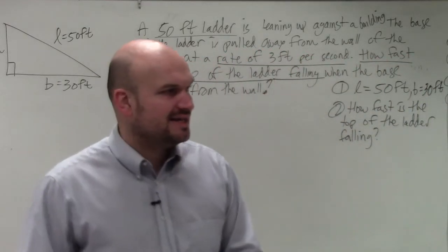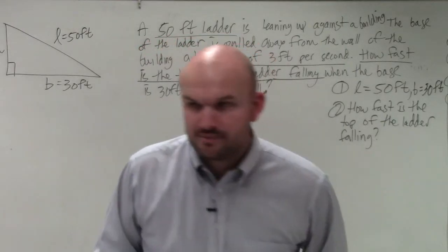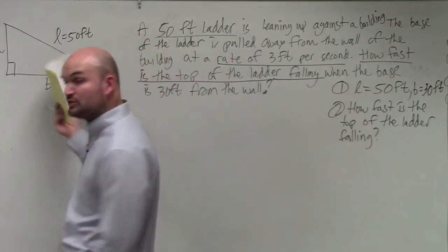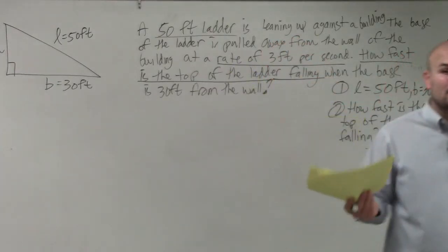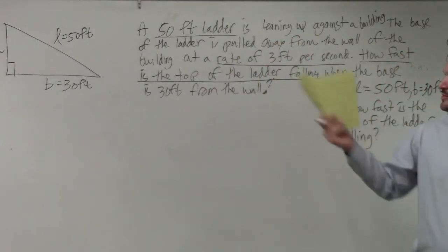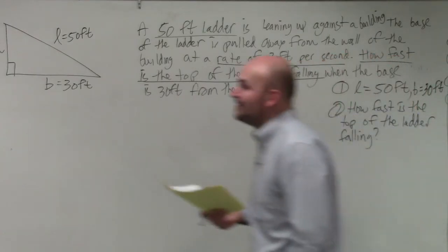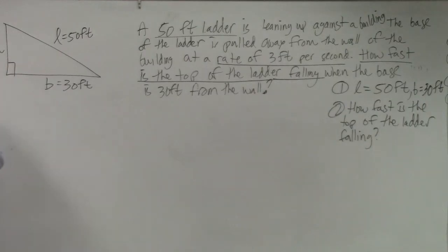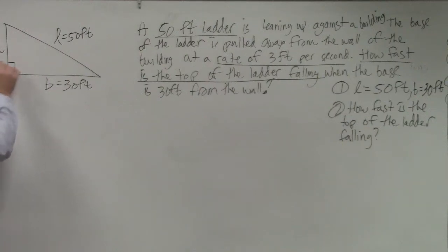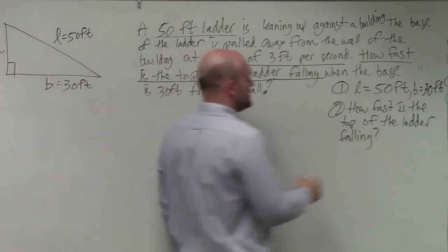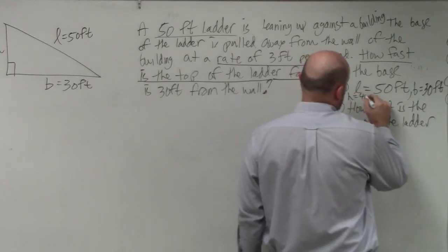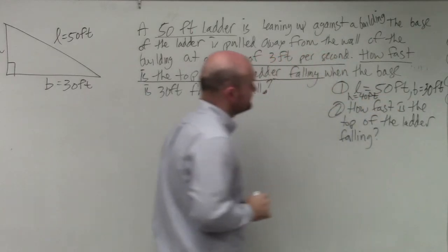What we need to do is find the height — we want to find the height at that current point in time, that instantaneous rate of change. Does anybody remember your Pythagorean triples from geometry? 3, 4, 5 — so therefore your height is going to be 40 feet. H equals 40 feet.